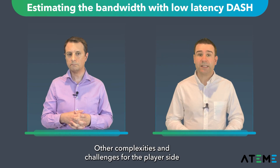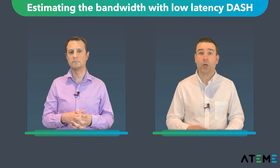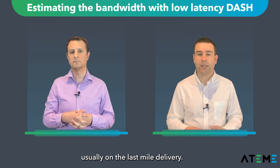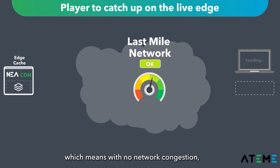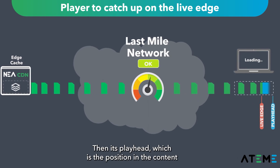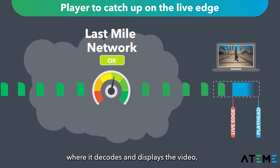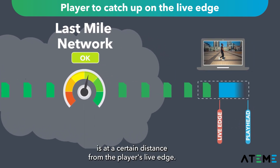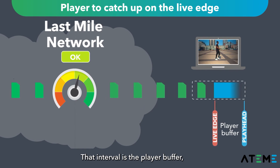Other complexities and challenges for the player side are related to the network, usually on the last-mile delivery. In normal network conditions with no congestion, the player will fill up its buffer at playback startup. Then its playhead — the position in the content where it decodes and displays the video — is at a certain distance from the player's live edge. That interval is the player buffer, for example 3 seconds.